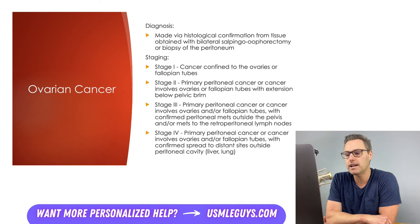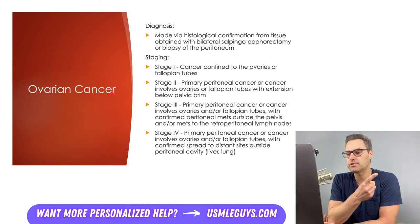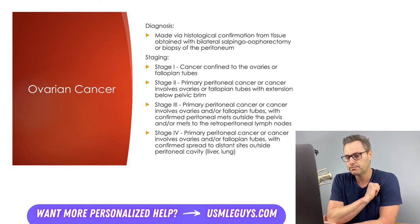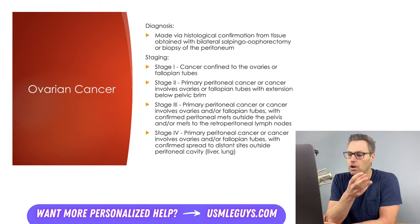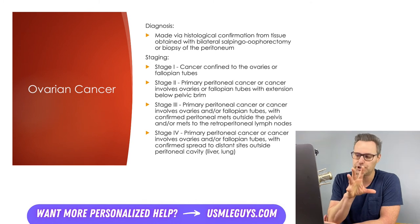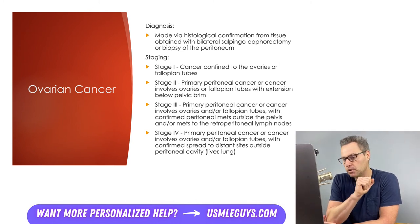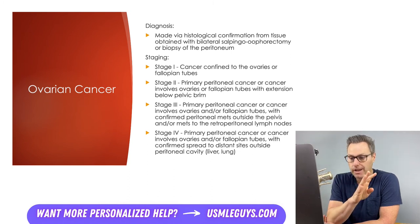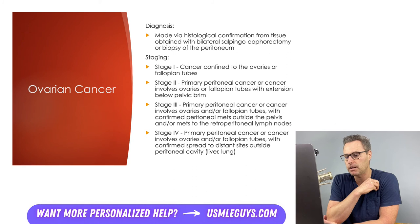These cancers are staged depending on what organs and tissues are involved. Stage 1 cancer is confined to the ovaries or fallopian tubes; thus, primary peritoneal cancer is always at least stage 2. Stage 2 is either primary peritoneal cancer or cancer involving the ovaries or fallopian tubes with extension below the pelvic brim. Stage 3 involves confirmed peritoneal metastasis outside the pelvis and/or metastasis to the retroperitoneal lymph nodes. Stage 4 is confirmed spread to distant sites outside the peritoneal cavity, most typically the lungs and/or liver.